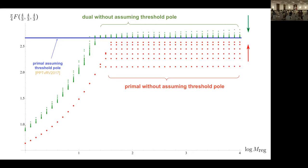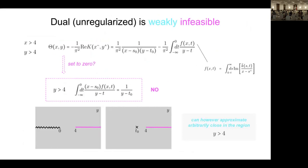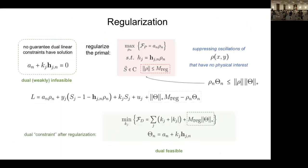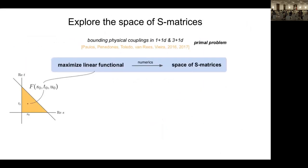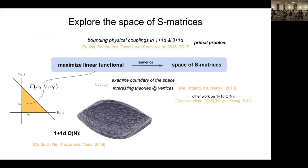Question: In one plus one dimensions, on the boundary you saturate unitarity and have special points corresponding to integrable theories. Do you expect something similar here — special points corresponding to particular theories? Answer: We haven't yet produced a shape like that, but it's something we're working on now. It will be very interesting to look at the shape of the space of theories and see if there are special points and how they compare to pion physics. No specific expectations yet.